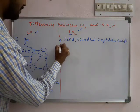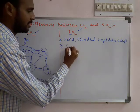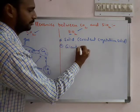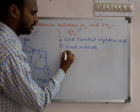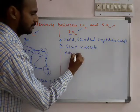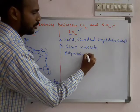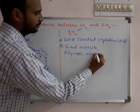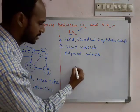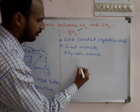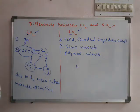Whereas SiO2 is having a giant molecule structure. The giant molecule, nothing but it is known as a polymeric molecule. That's why it is in solid form.